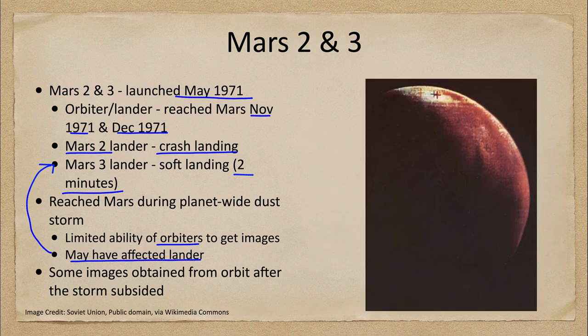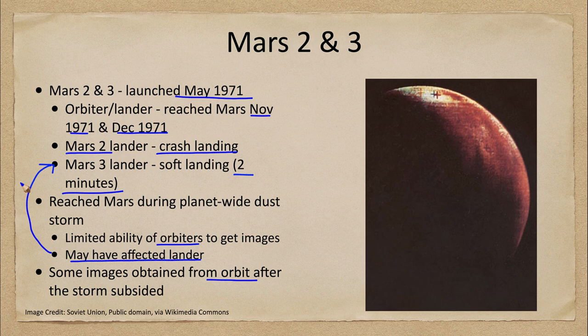This is one of the Mars 3 images from the orbiter after the storm subsided, and we can start to see some lighter and darker areas. When we compare these to the Hubble images we looked at, we're looking at varied differences in quality and decades worth of difference in technology improvement, so of course things are not going to look quite as nice here as they did with the Hubble Space Telescope or with the more modern rovers we see today.